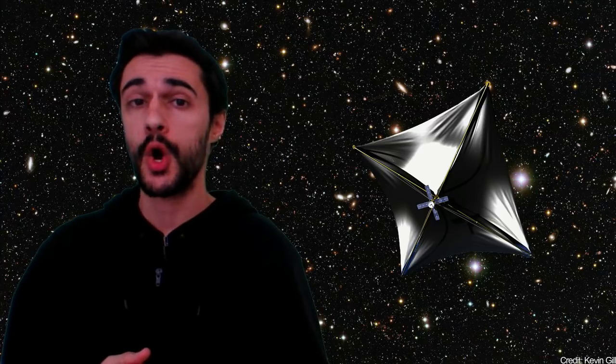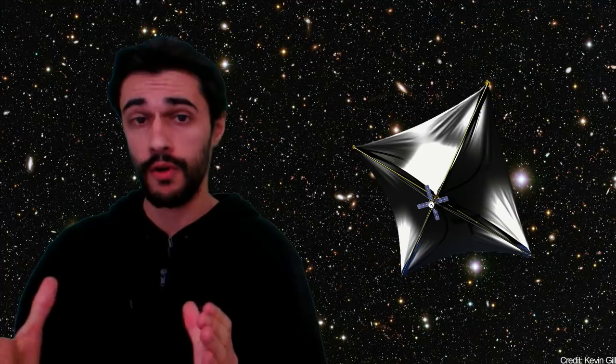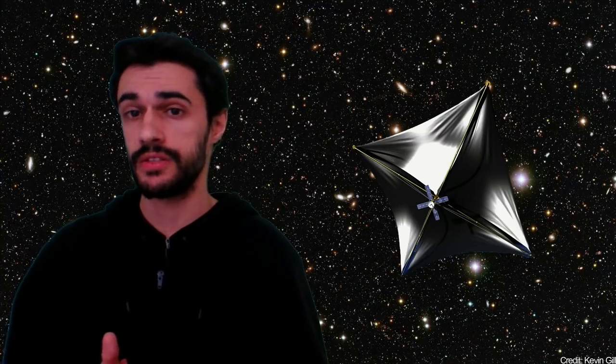In 2016, the billionaire Yuri Milner and Stephen Hawking announced a project called Starshot to send nanocrafts to Proxima B. These nanocrafts, which are miniature space probes attached to light sails, would be sent in 2036 and arrive in 2056.